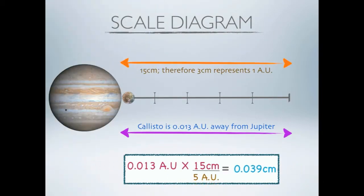This is my scale diagram. The middle line is 15 cm long, so 3 cm represents 1 AU. Callisto is only 0.013 AU away from Jupiter, so it is very close to its parent planet on the scale diagram. In this diagram, Callisto probably should have been slightly smaller, but I decided to leave it for the sake of you being able to see. My calculations to determine where to place Callisto on the scale are below the diagram.